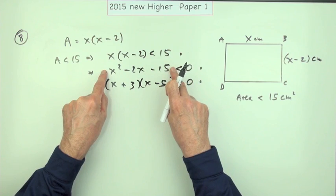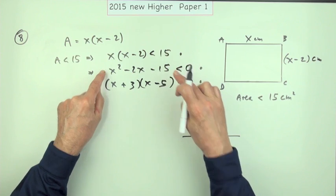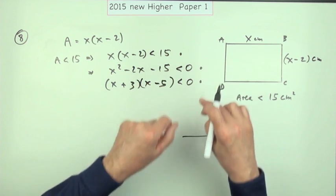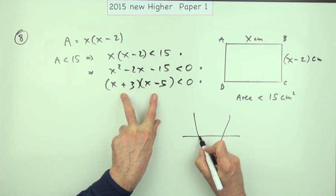It tells you where this quadratic switches from being above to below, from being greater than to less than zero. So here's this quadratic, and this is telling you it's got roots at -3 and 5.